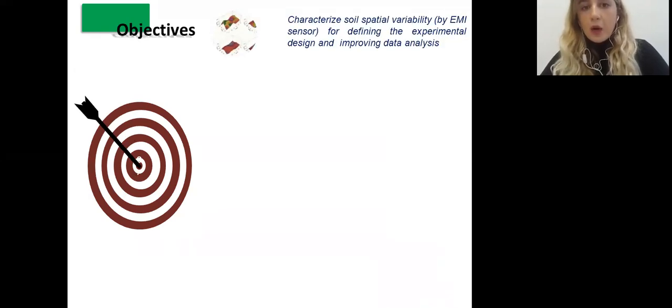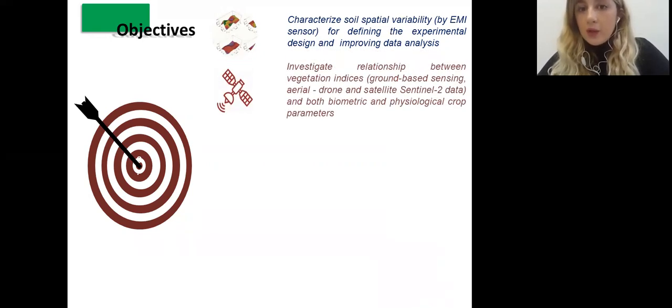When we speak about objectives, the first objective was to characterize soil variability in order to have experimental design. And then we focused on investigation of the relationship between vegetation indices derived from ground-based sensing, aerial drones, and satellite Sentinel-2 data, and biometric and physiological crop parameters.